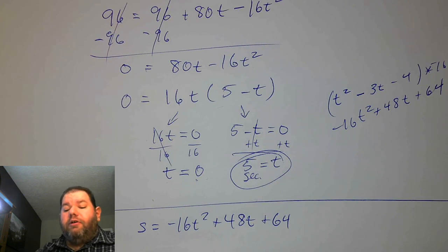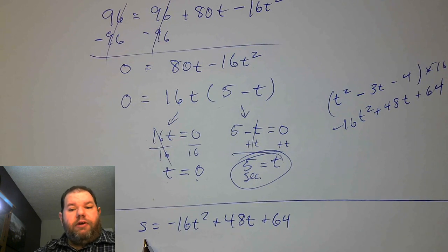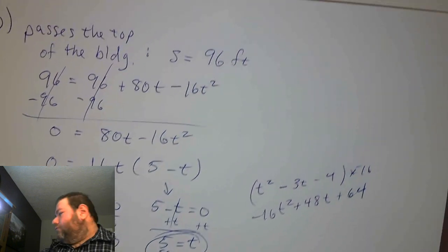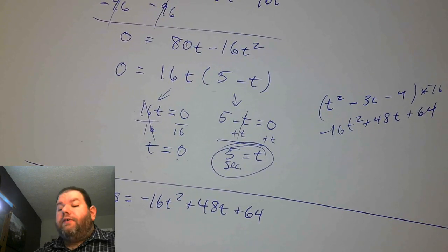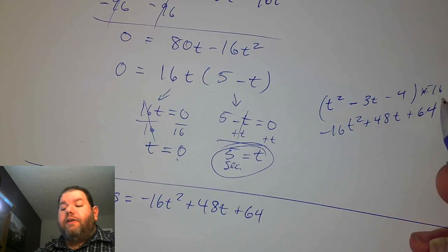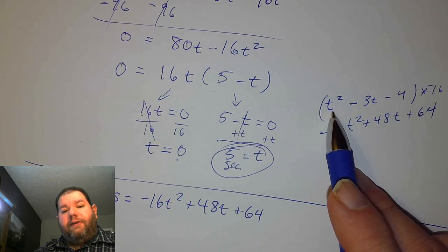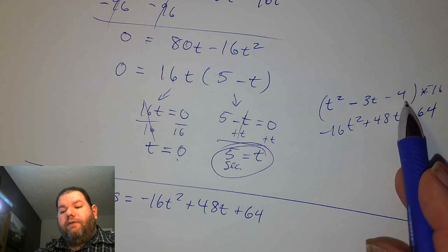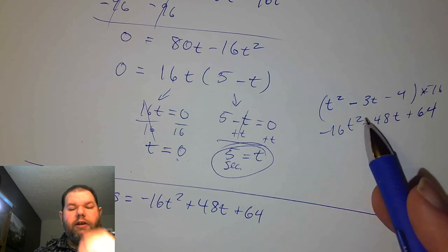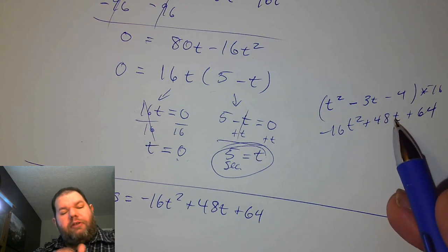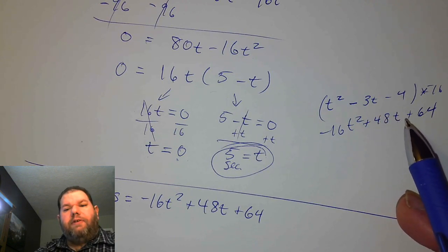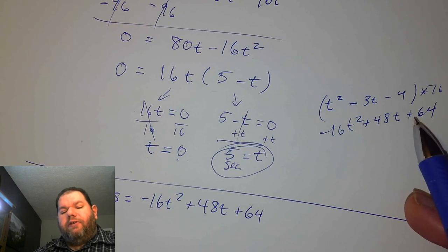If we want to figure out when the height equals 0, we plug in 0 for s. Once set equal to 0, we take out negative 16 — like we did in the previous example — and end up with t squared minus 3t minus 4. We factor that and get two solutions, one positive and one negative.